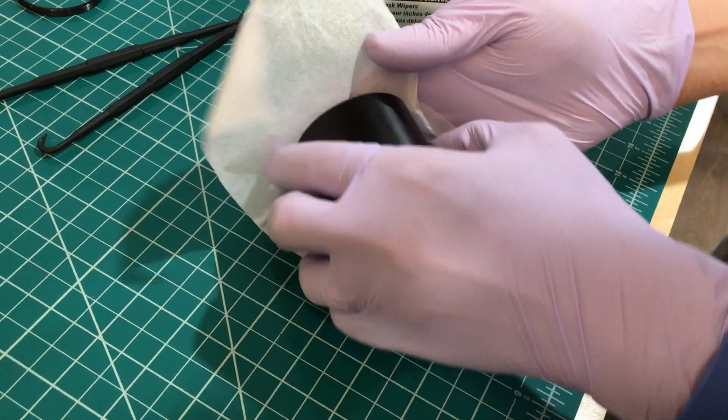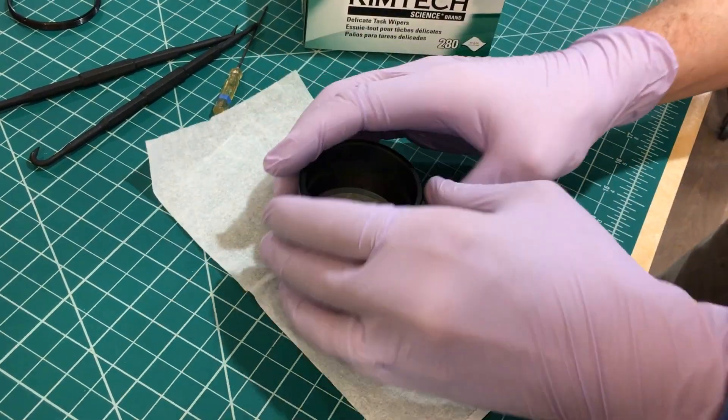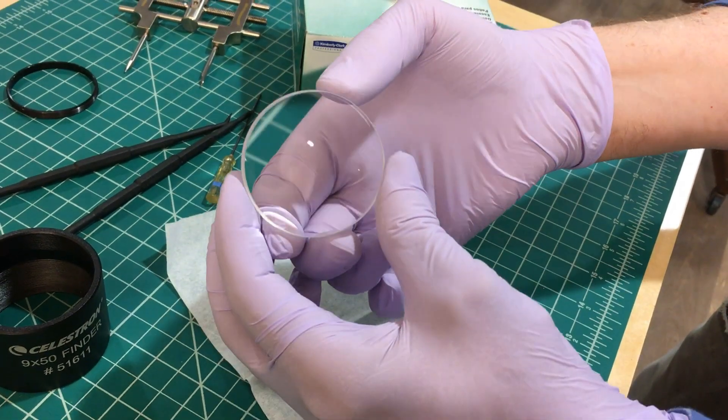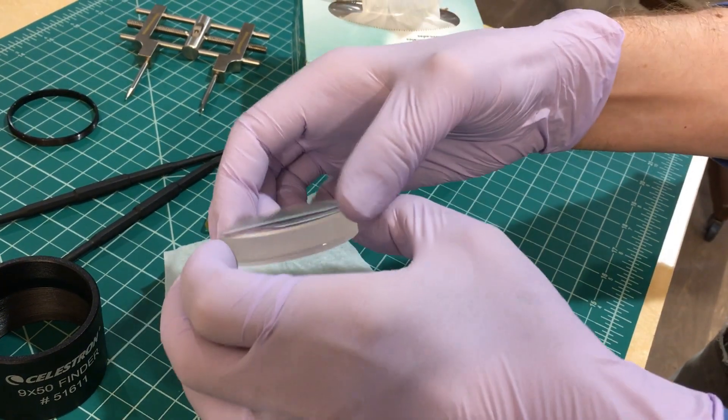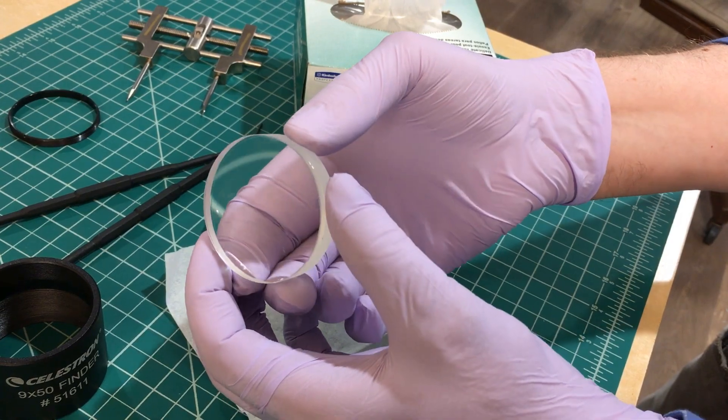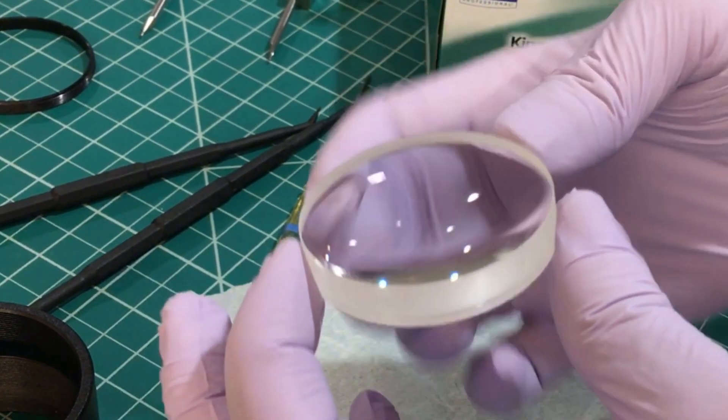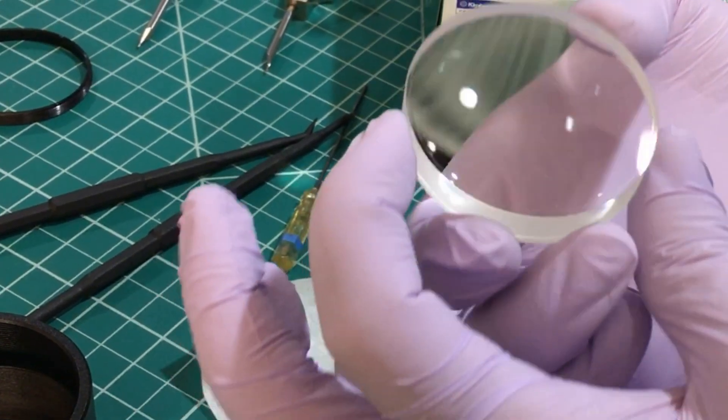Visual inspection shows that this lens looks pretty good cosmetically. Using reflections from the room lights, we see that it's clean and without scratches. The anti-reflection coating is in good condition. We don't see any smears or fingerprints. Here you can see the interface where the two components of the doublet are cemented. This lens is likely well corrected for spherical aberration.